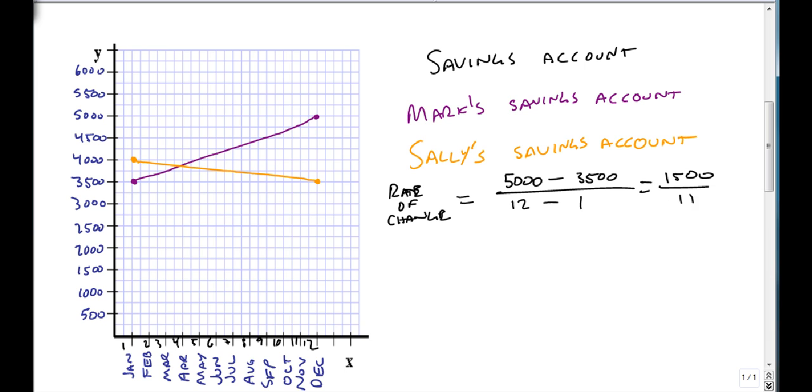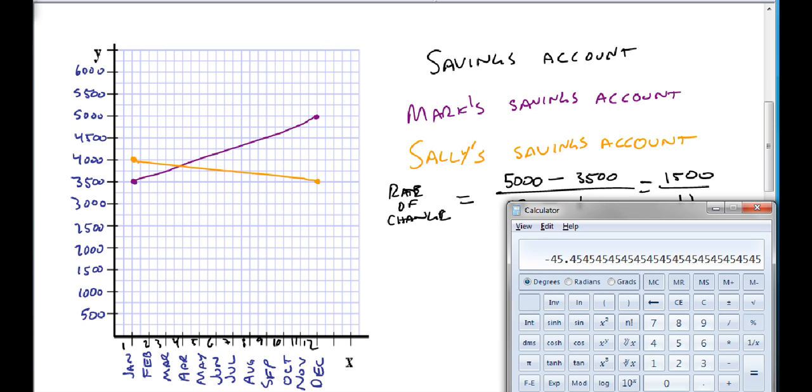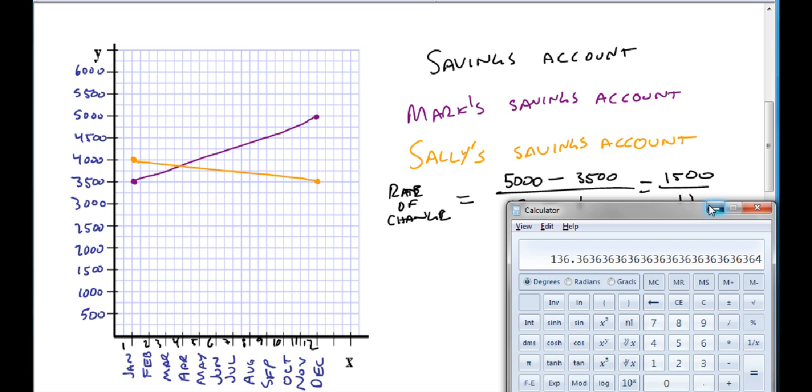This is going to give us $1,500 over 11. Now we want to grab the calculator. If we take $1,500 divided by 11, we get $136.36. We'll round to the nearest cent in this case. This is our average rate of change. Every month it looks like Mark is able to put away another $136.